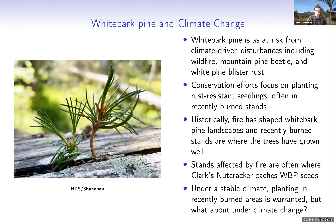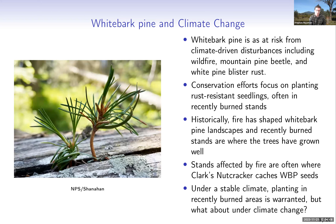Rising temperatures and drought have already resulted in widespread forest mortality throughout the world, and whitebark pine has previously been sheltered from many climate effects due to its location at high elevations with cold temperatures. However, it is increasingly at risk from climate-driven disturbances including wildfire, drought, mountain pine beetle, and white pine blister rust. Losses of whitebark pine recently led to it being listed as a threatened species under the Endangered Species Act by the United States Fish and Wildlife Service. Conservation efforts have mostly focused on planting rust-resistant seedlings, often in recently burned stands, where trees have grown well due to release from competition and increased sunlight.